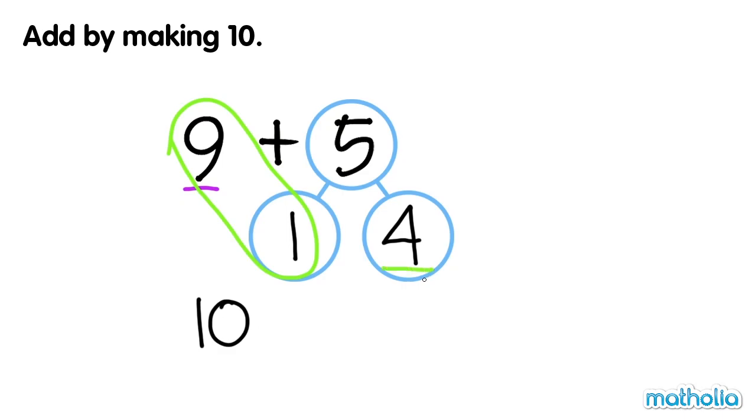Ten and four make fourteen. So nine plus five equals fourteen. Nine plus five is the same as ten plus four.